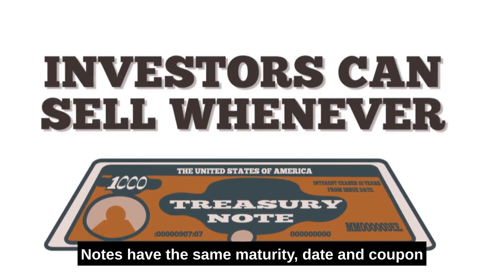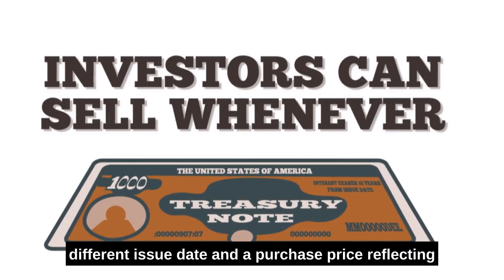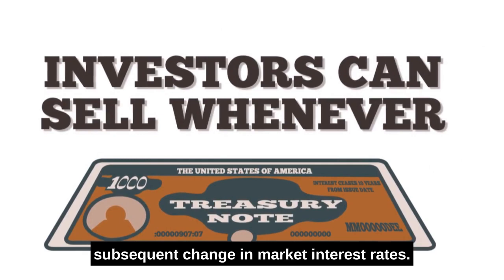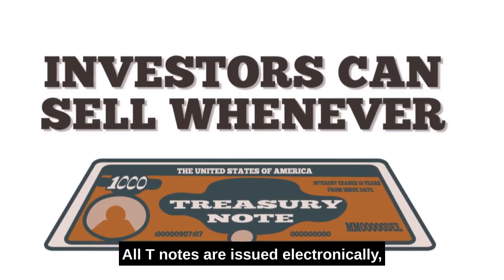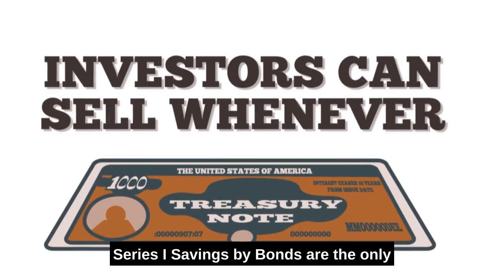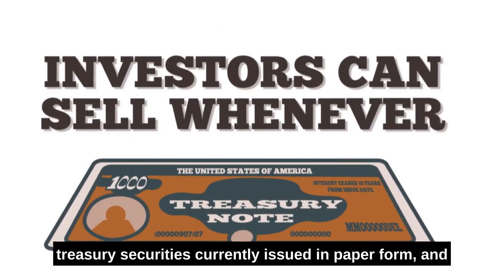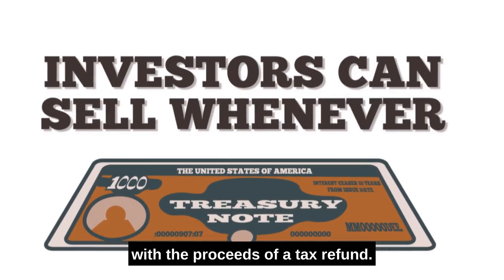Reopened notes have the same maturity date and coupon interest rate as the original issue, but a different issue date and a purchase price reflecting subsequent change in market interest rates. All T-notes are issued electronically, meaning investors cannot obtain paper certificates. Series I savings bonds are the only Treasury securities currently issued in paper form, and they can only be bought in paper form with the proceeds of a tax refund.